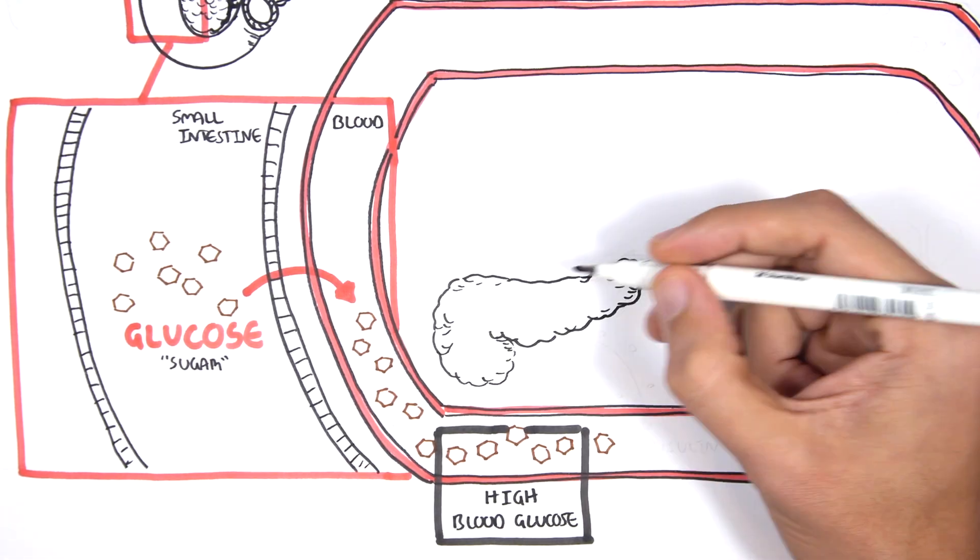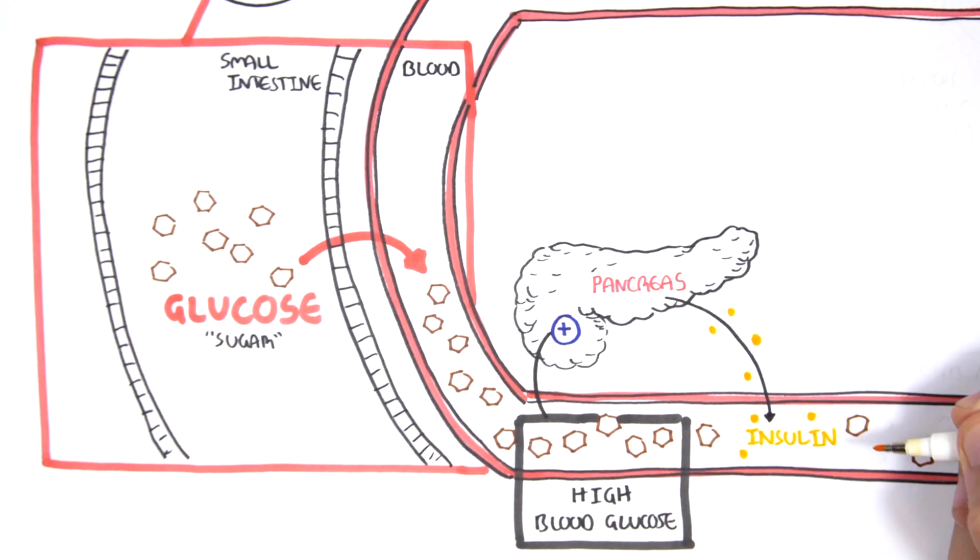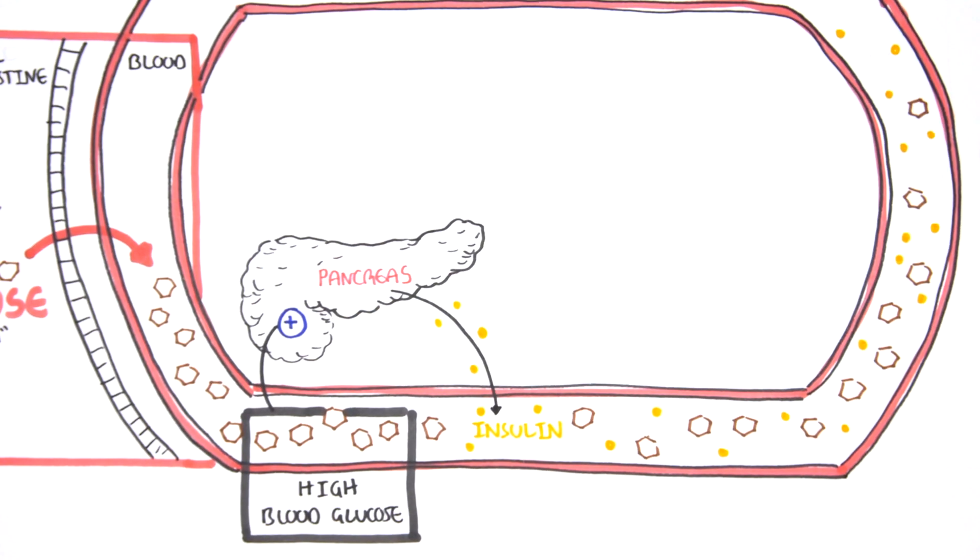This will stimulate the pancreas to release the hormone insulin into the bloodstream. Insulin targets many cells to promote the clearance of glucose from the blood. Defects in this process can be catastrophic as we often see in individuals with type 1 diabetes who lack the ability to make insulin.